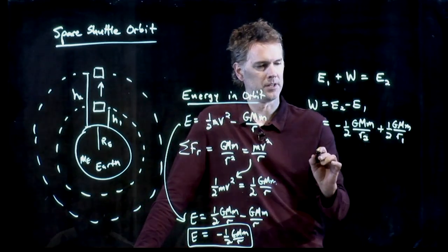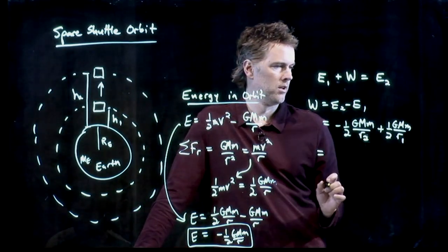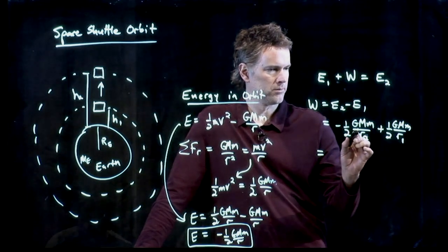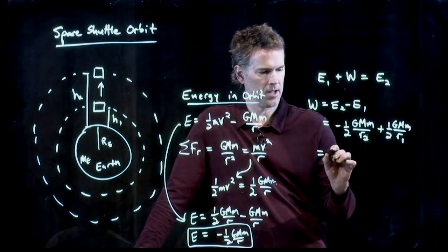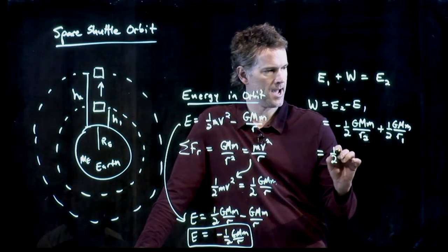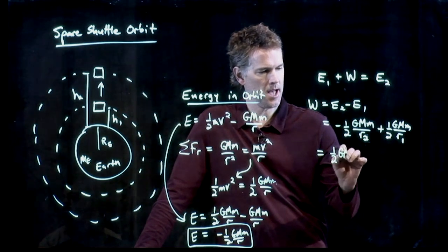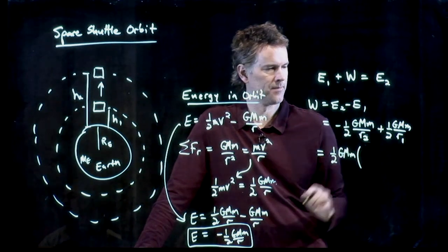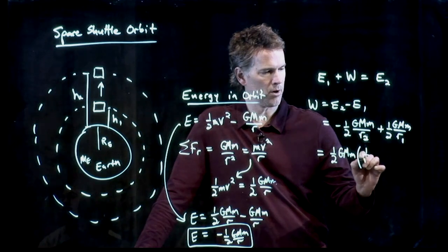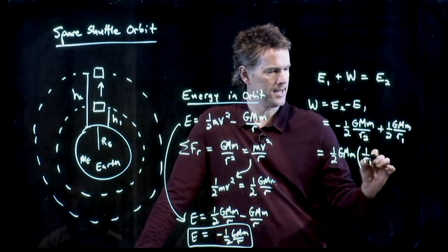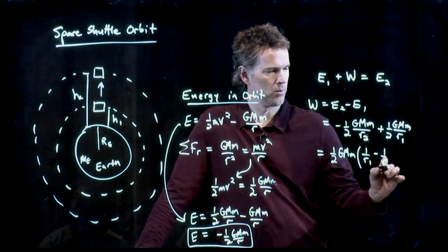And now we can put this stuff together and figure out what we need to do. We've got GMM, we have a 1 half, all those are the same. So we can put 1 half GMM out in front. And then I'm going to have a positive 1 over R1 and a negative 1 over R2.